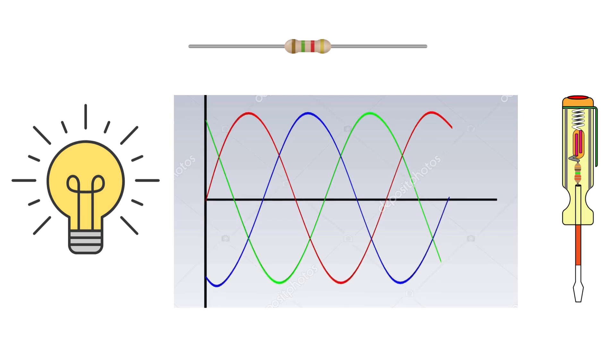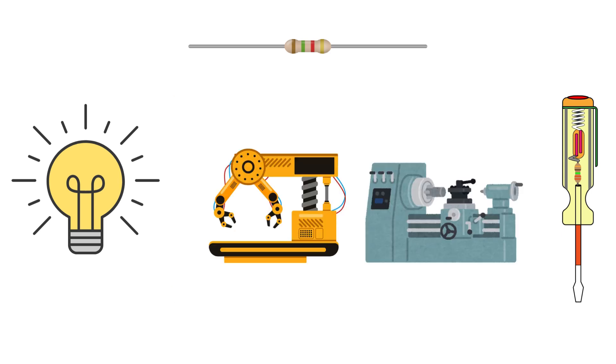This means that while one wave is at its peak, the other two are at different points in their cycles. This constant flow of power makes it ideal for heavy machinery.